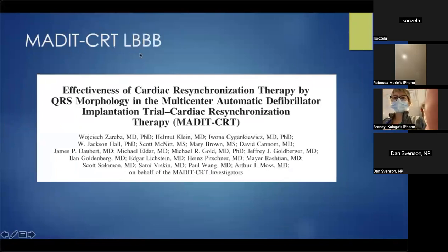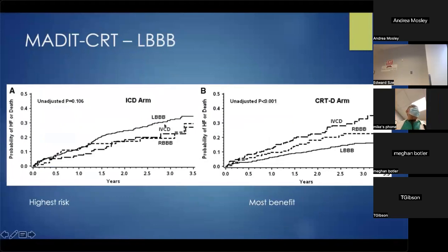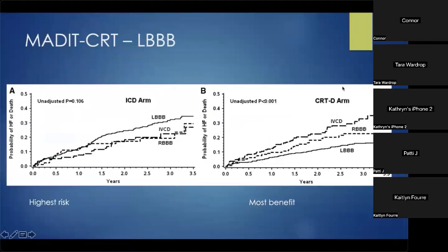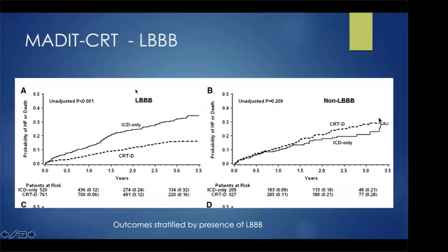MADIT-CRT was the first study to identify that it is truly those with left bundle branch block who benefit. In the ICD arm, those with left bundle were at the highest risk of heart failure or death. In the CRT-defibrillator arm, those with left bundle had the most benefit. When stratified by presence or absence of LBBB, CRT showed a very powerful effect, while in non-left bundle patients, CRT showed a non-significant trend that may be harmful.